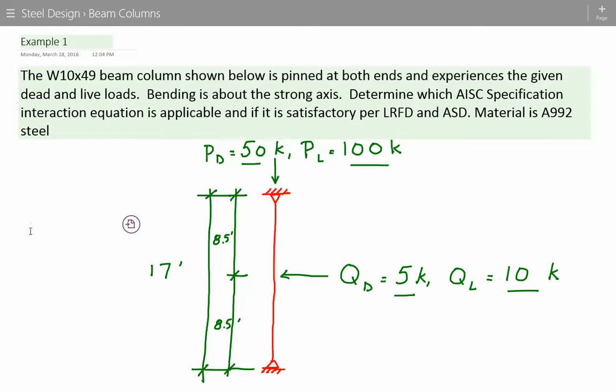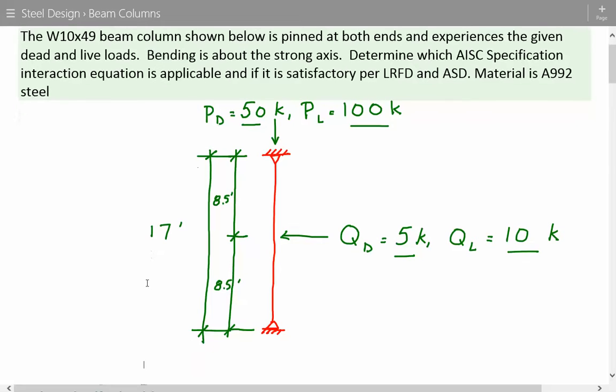The material is A992 steel. So here's our beam column, the length is 17 feet and it's pinned at both ends. We have a dead axial load of 50 kips, an axial live load of 100 kips, a transverse dead load of 5 kips and a transverse live load of 10 kips, and the transverse load is acting at the center of the beam column.